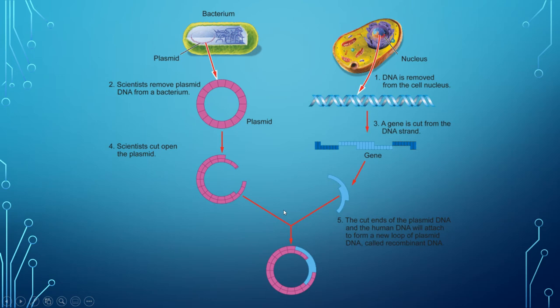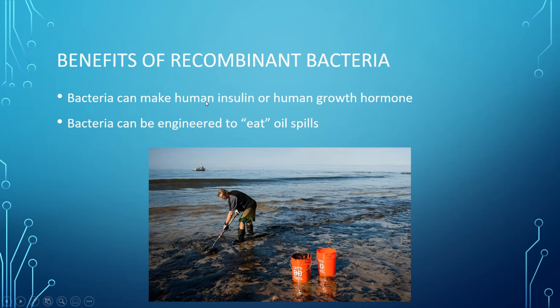What else can we do? The insulin example is a big one. We've also created bacteria that can eat oil. We're not just talking about benefits to humans like human insulin or human growth hormone — we can engineer bacteria to do a lot of different things. In college, I actually inserted a luciferase gene into bacteria. Luciferase is the enzyme found in a lightning bug that makes it glow, and we were able to make bacteria glow. You can learn a bunch of different things from that as well.